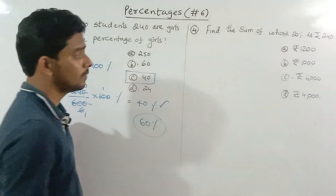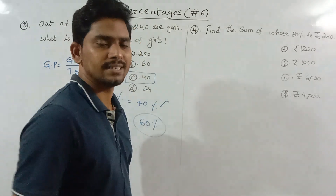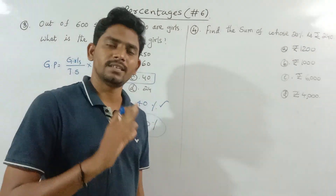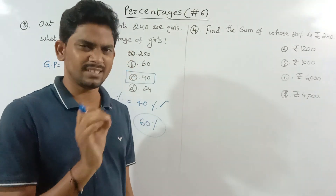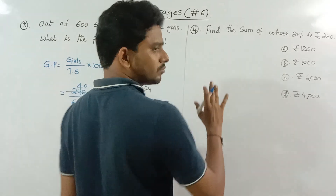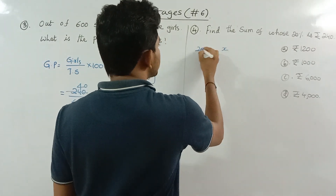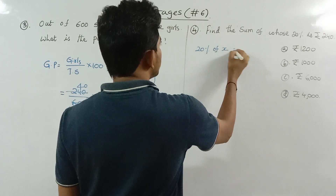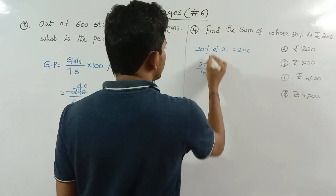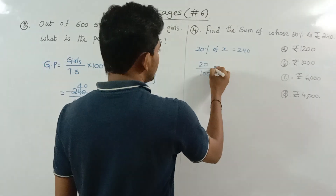Find the number whose 20% is 240. Let the number be x. So 20% of x equals 240, meaning 20 divided by 100, multiplied by x, equals 240.